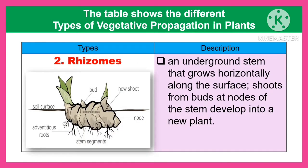The second type is rhizomes. The rhizome is an underground stem that grows horizontally along the surface. Shoots from buds at nodes of the stem develop into a new plant.